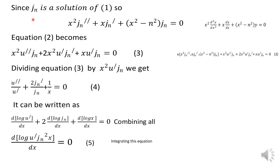Jn is one solution, and we want to find the second solution. We have already seen a method to find the second solution. Those methods can be applied here also. We are simply using those steps to find the second solution, because the second solution of the Bessel equation is the Neumann function.